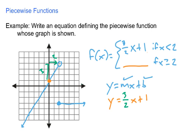Now what if x is greater than or equal to 2? This is the second piece. Again it's a line, but this part of a line is a horizontal line, and we remember that horizontal lines have equations in y only.